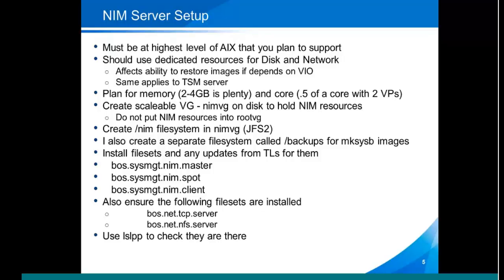I already mentioned that I use dedicated resources. I also make sure I give it about 4GB of memory and half a core with a couple of EPs. Unless I'm planning on doing a lot of NIM things at the same time, that should be more than enough resources. The first thing the NIM server is going to need is a volume group that has enough disk to hold all of the NIM resources. Depending on whether you're going to have a lot of mksysb images and so on, you may need something larger. I would never put my NIM resources into root VG, because you end up with a very large root VG that you're going to have a problem recovering. So I create a /NIM filesystem in my NIM VG, and that NIM VG is a scalable VG because it's going to get big. You'll also have to go into /etc/security/limits and make sure that you set the maximum file size to unlimited, so that you're not restricted in the size of the files you can create, because the files you're going to be copying in there for the NIM images are going to be mksysb images.